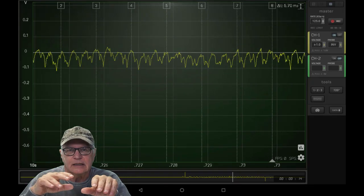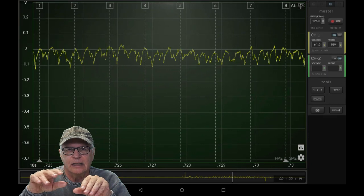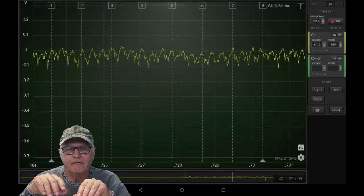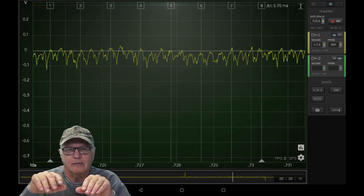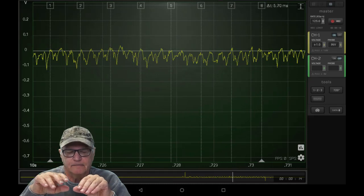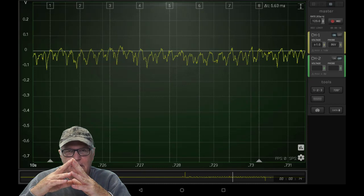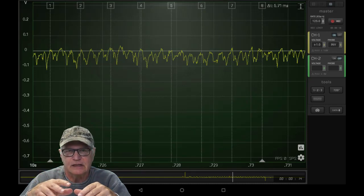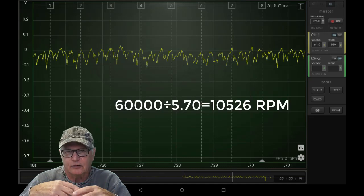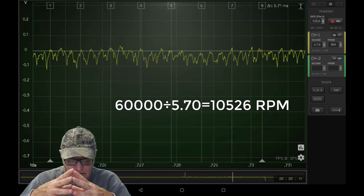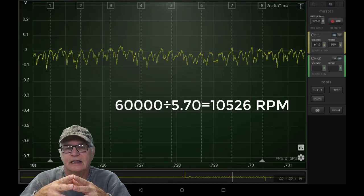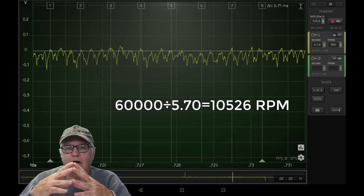Here, it seems at eight labels with three peaks per label, so we have maybe 24 segments on this commutator. And it represents one revolution, and it has a 5.7 millisecond duration. So 60,000 divided by the 5.7 milliseconds is equal to an RPM of 10,526 for that armature.